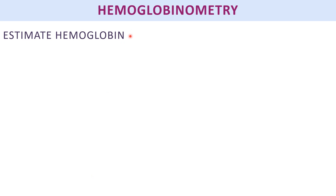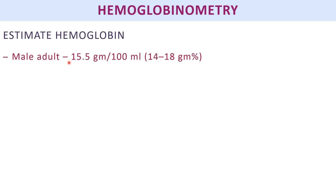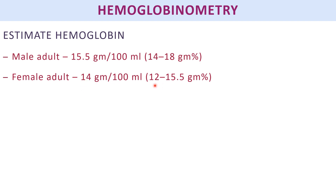The aim is to estimate the hemoglobin in your own blood. The next question will be: what is the normal value of hemoglobin in a human body? In males it is 15.5 g/dL, range 14–18 g%. In females it is around 14 g/dL, range 12–15.5 g%. In newborns it is higher at 16.5 g/dL.